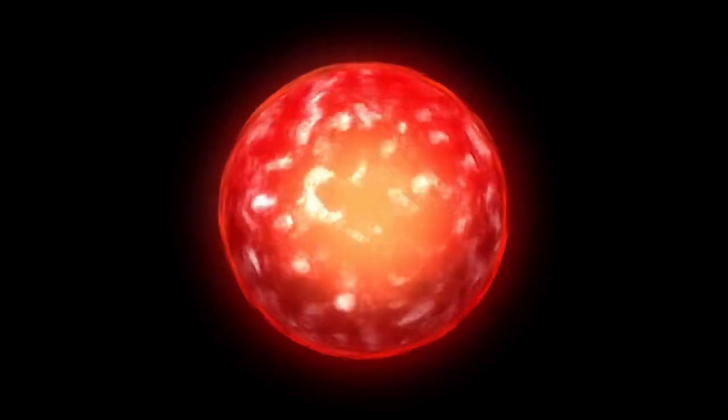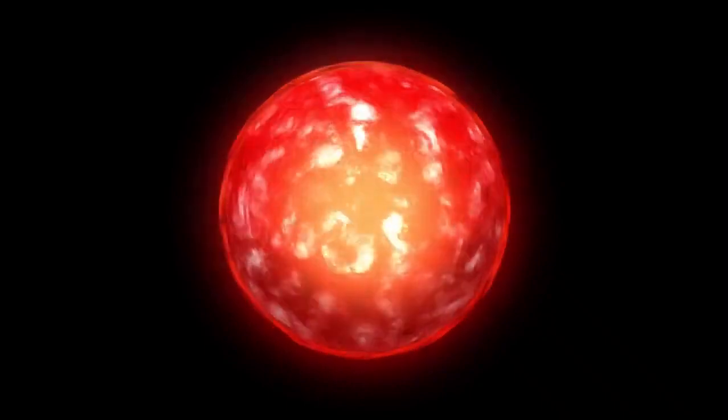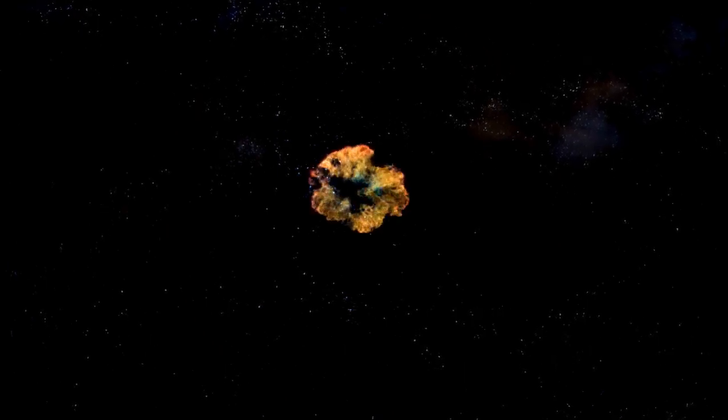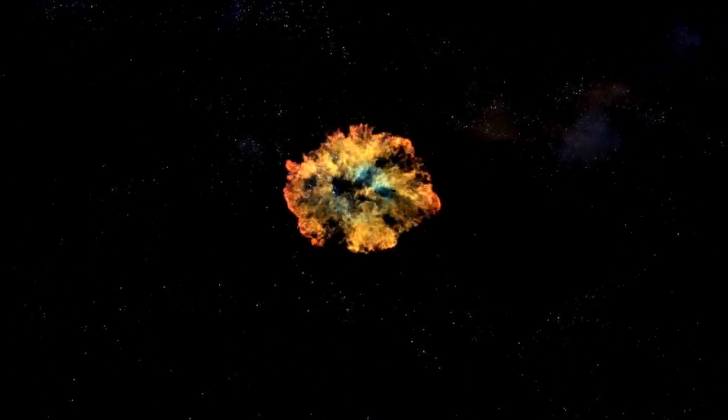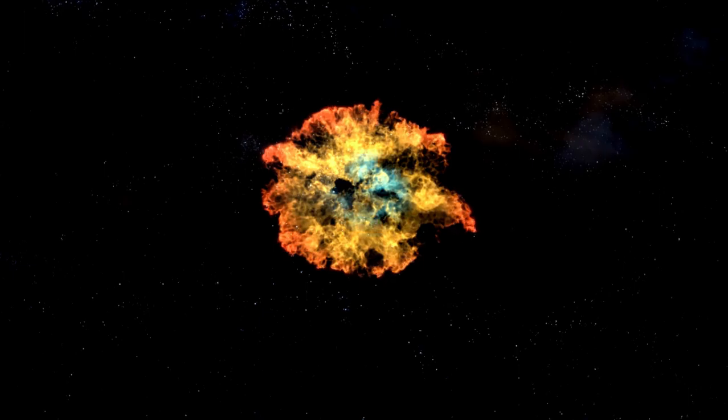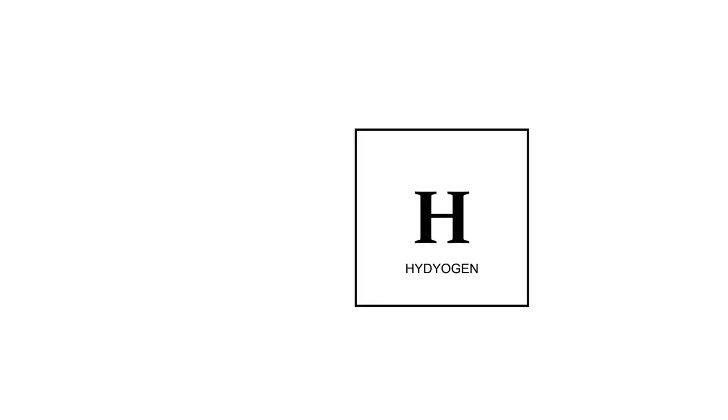In the case of Betelgeuse, a red supergiant nearing the end of its life cycle, this balance has become increasingly unstable. As the star depletes its core hydrogen fuel, the nuclear fusion processes that sustain it undergo significant changes.